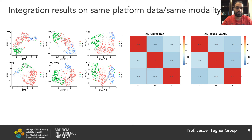Next, we evaluated performance on same-platform data having the same modality, where we have data from old and young mice. The results show that SEGAN still preserves the cell structure in the translated domains.